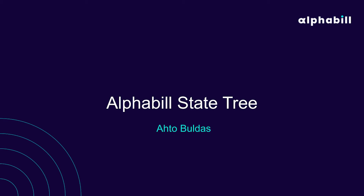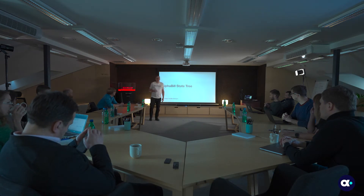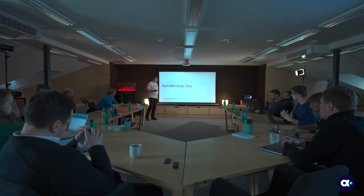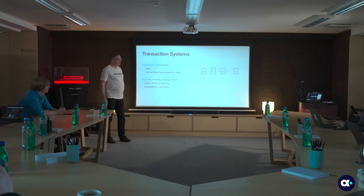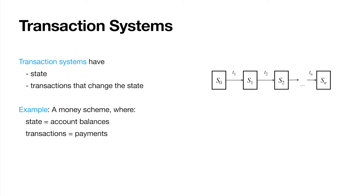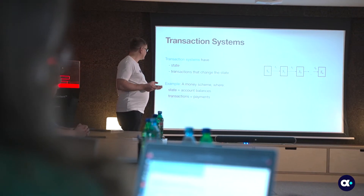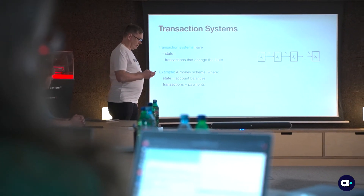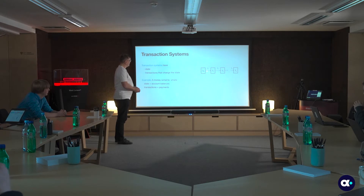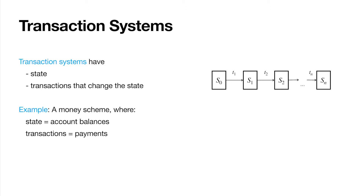This lecture is about the Alphabill State Tree. First I will explain what the state is, why it's needed, and how it appears in connection with implementing a blockchain. What is implemented is a transaction system, and transaction systems have state and transactions that change the state. For example, if we want to implement a money scheme, we have state as account balances and transactions as payments. We have a sequence of states: an initial state, then a first transaction appears, it transfers the state to the next state, and so on.